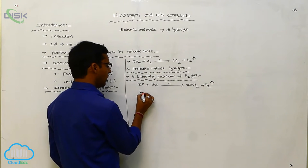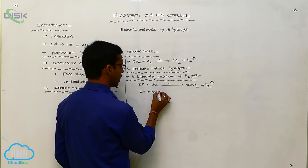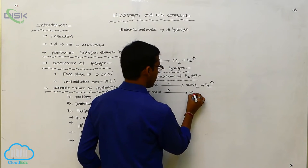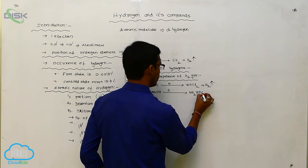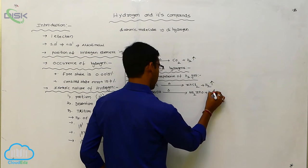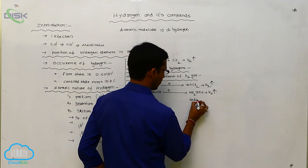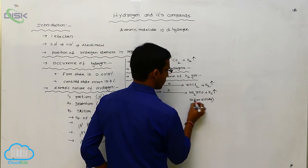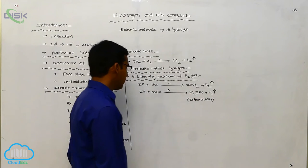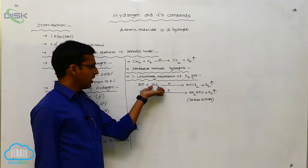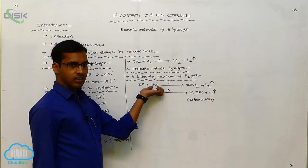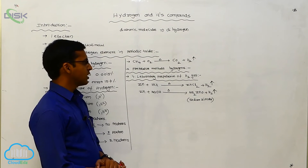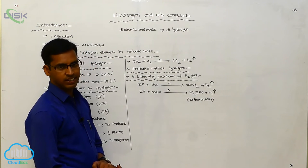Alternatively, zinc metal reacted with sodium hydroxide through heating forms sodium zincate (Na₂ZnO) plus hydrogen gas. So, when metals dissolve in dilute acid or dilute base, hydrogen gas is liberated. This is the laboratory preparation of hydrogen gas.